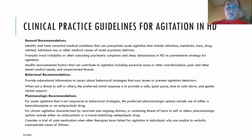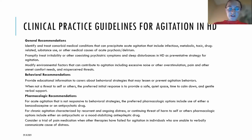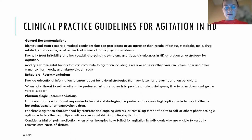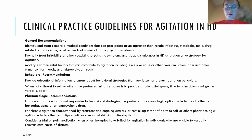For pharmacological management, for acute agitation not responsive to behavioral strategies, preferred pharmacological options include either benzodiazepines or antipsychotic drugs. For chronic agitation characterized by recurrent and ongoing distress or continuing threat of harm to self or others, pharmacological options include antipsychotics or mood-stabilizing anti-epileptic drugs. A trial of pain medication should also be considered when other therapies have failed for agitation in individuals unable to verbally communicate the cause of distress.